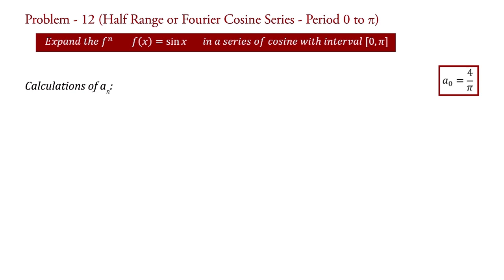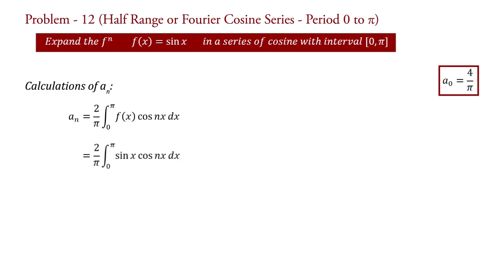Now aₙ: aₙ = (2/π) integral from 0 to π of f(x) cos(nx) dx. Putting f(x) = sin(x), therefore aₙ = (2/π) integral from 0 to π of sin(x) cos(nx) dx.